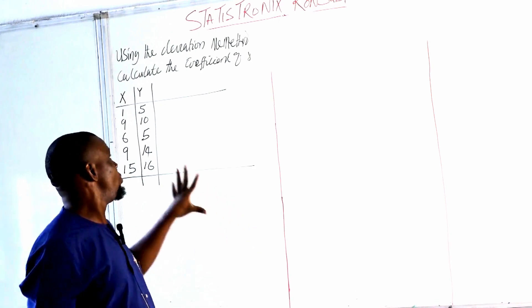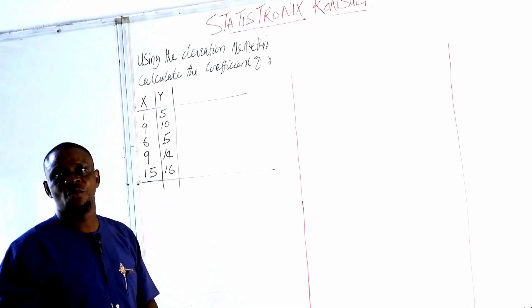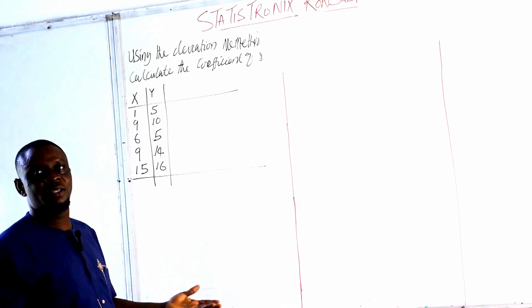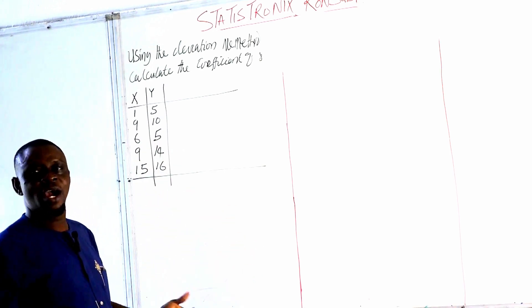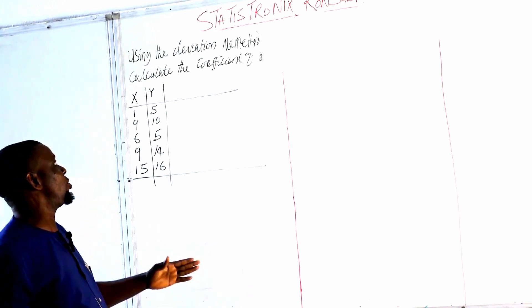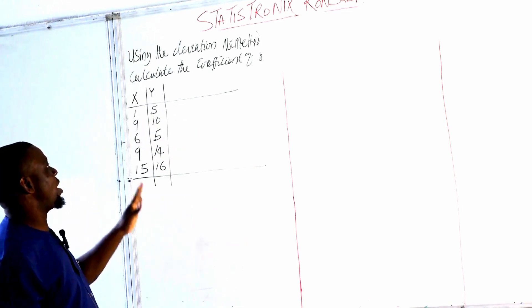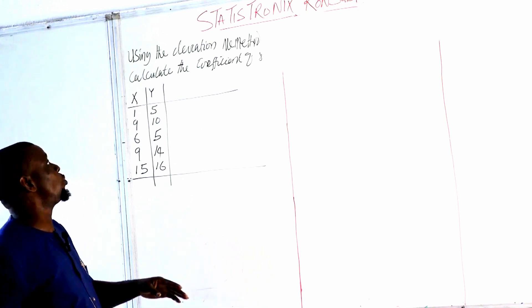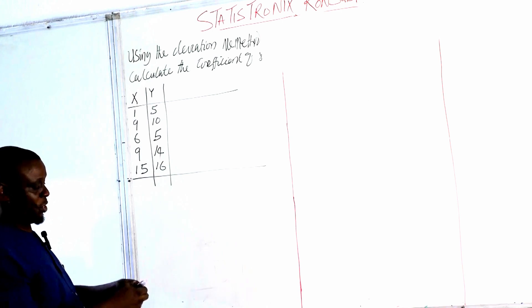So we are to use this. We have data for X and that of Y. It could be anything. It could be weight gain and food intake, it could be rainfall and crop yield, it could be data collected for anything. But let's just say the relationship between X and Y. So we are given this data and then we want to use the division method of correlation.